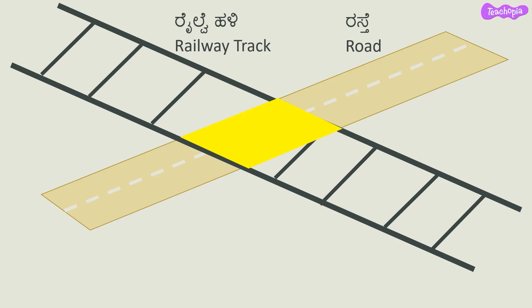In case of roads, to avoid accidents at the intersection of roads or at junctions, we have signals.